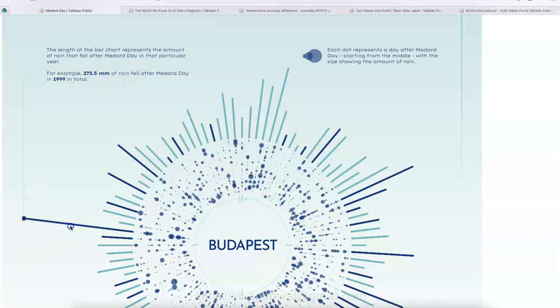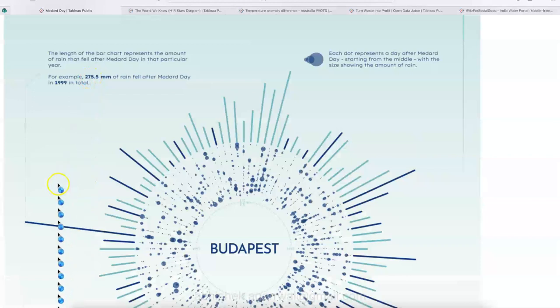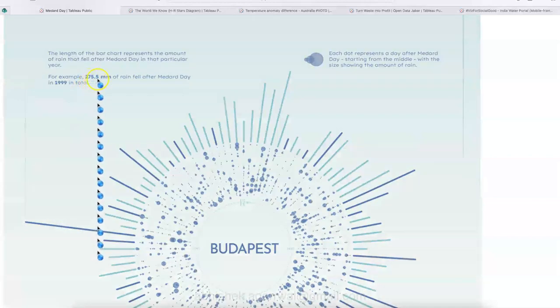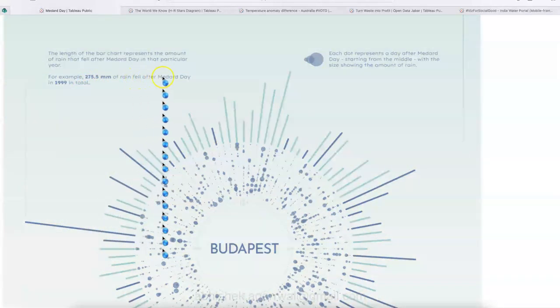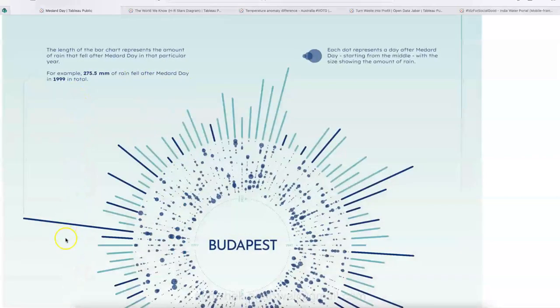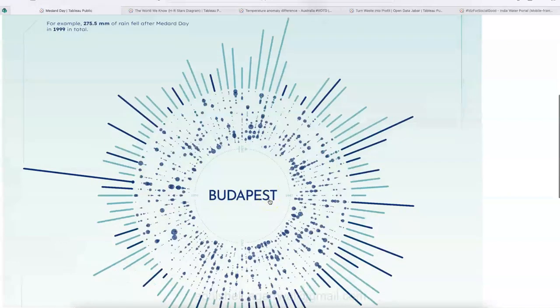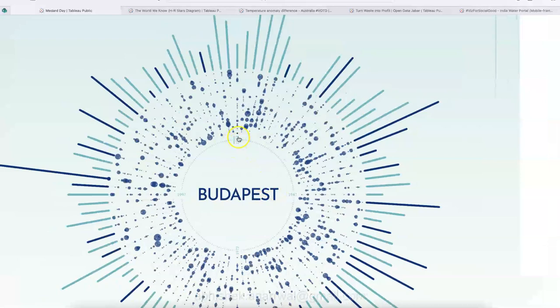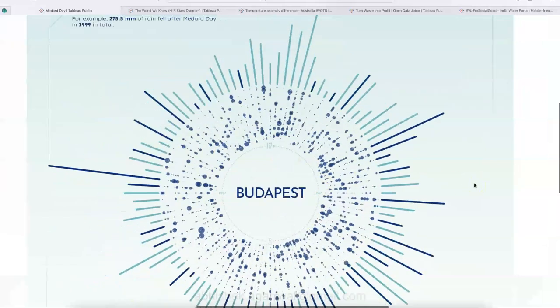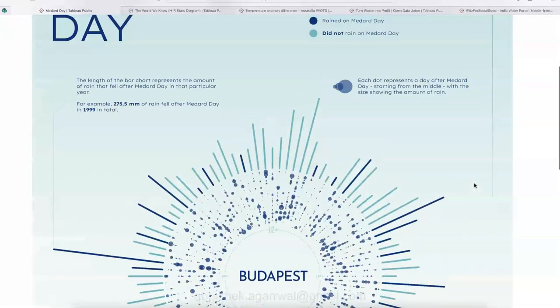So the length of the bar, which is this length, as you can see, the line is going. The length of the bar chart represents the amount of rain fell after Medard Day in that particular year. As an example, they have given, for example, over here, 275.55 mm of rain fell after Medard Day in 1999. So this information is something which is visible.